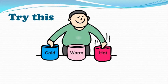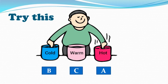For this activity, take three similar vessels — let us call them A, B, and C. Fill vessel A with hot water, vessel B with cold water, and vessel C with a mix of water from A and B, making it warm water. Dip your right hand in A and your left hand in B, and keep them immersed for two to three minutes.